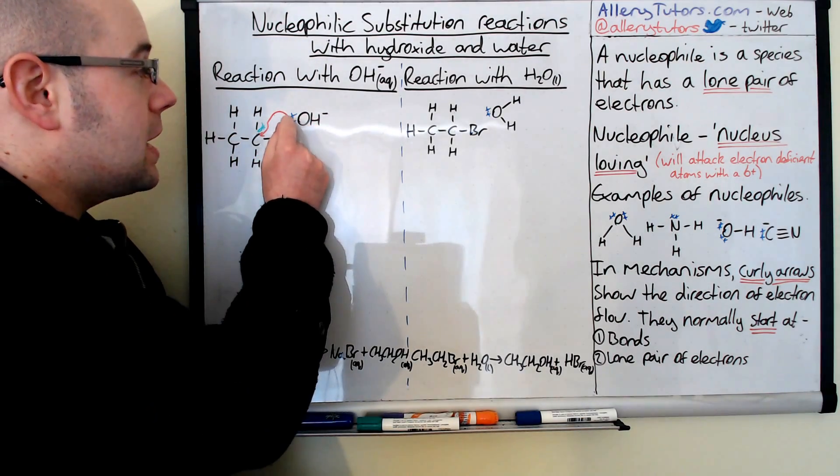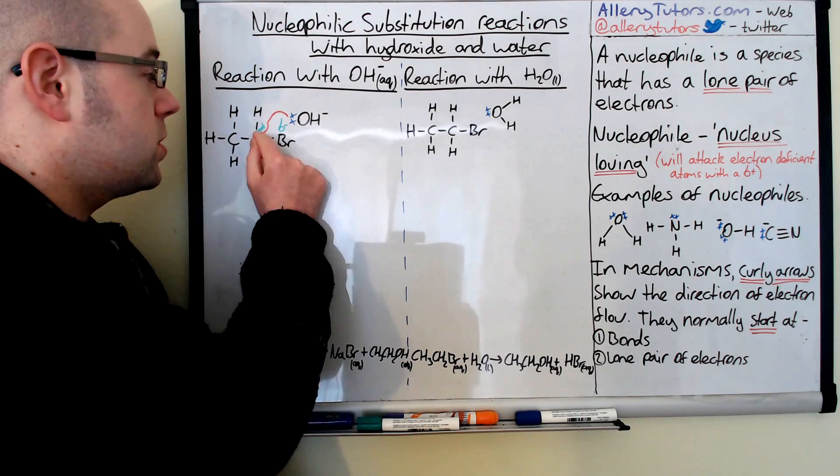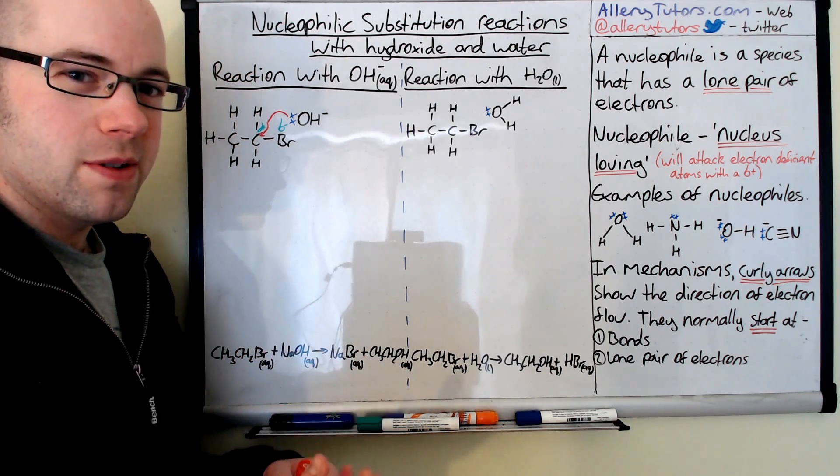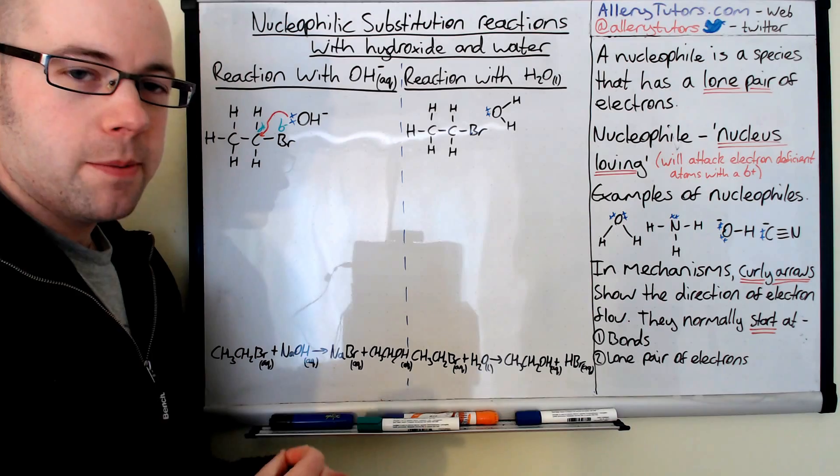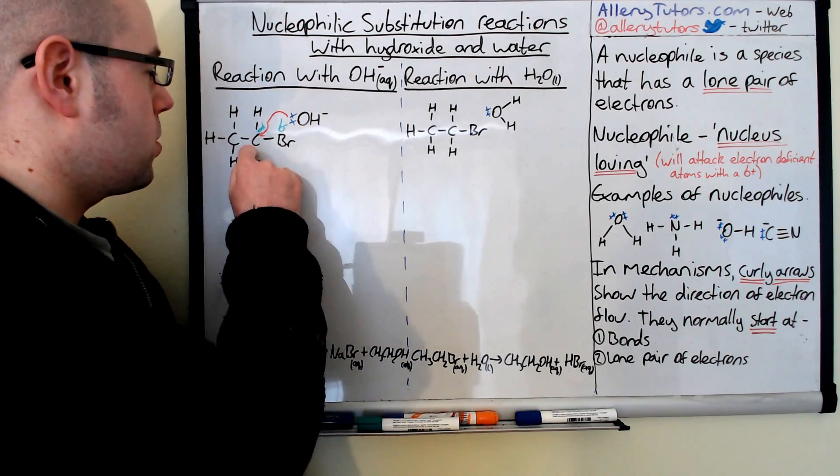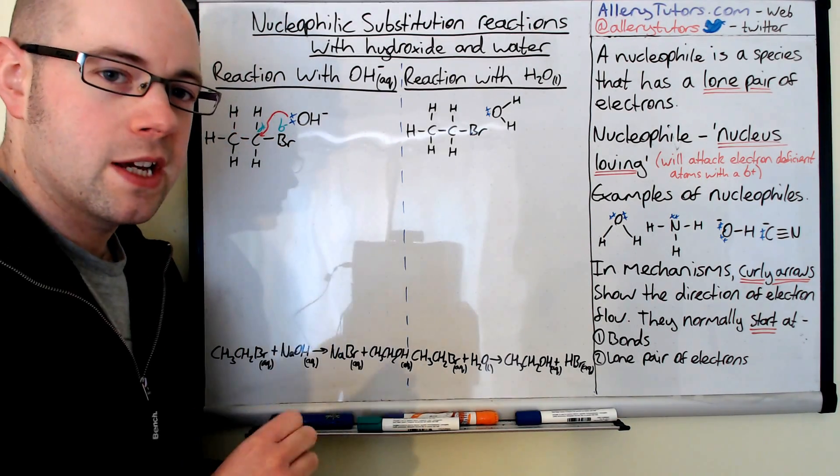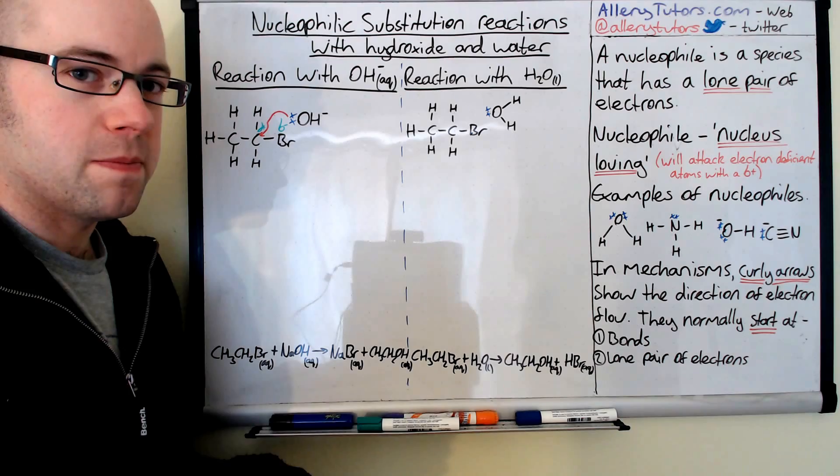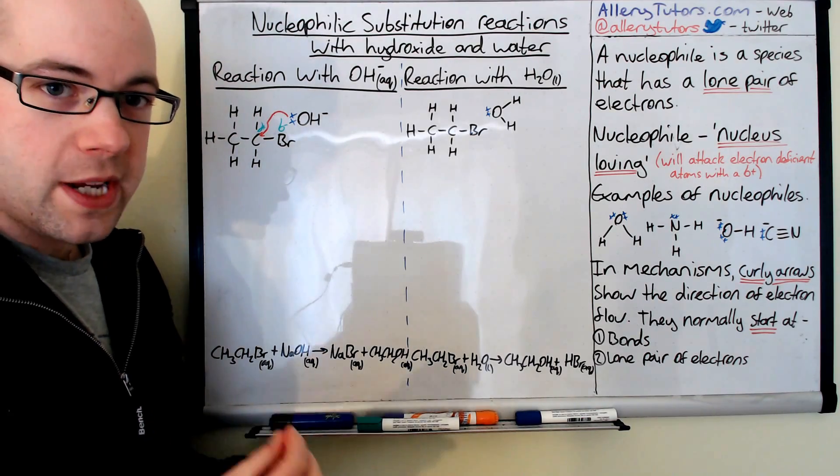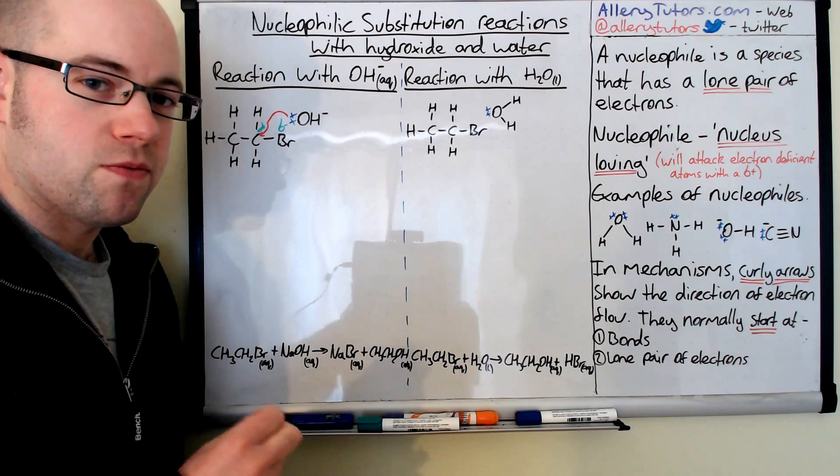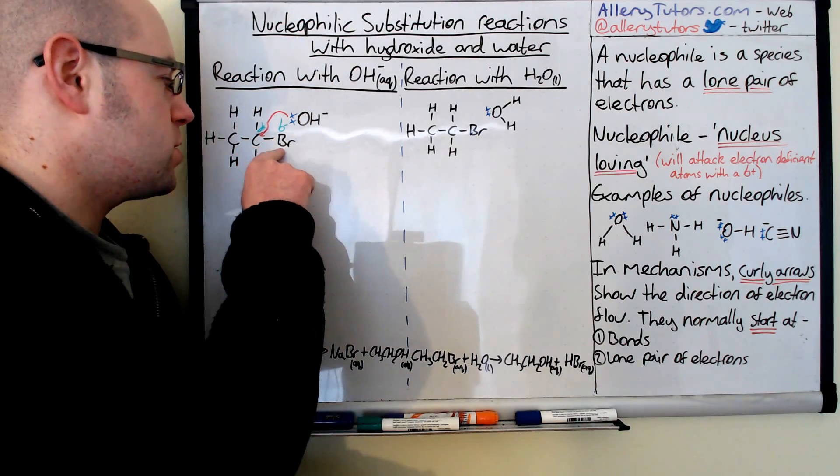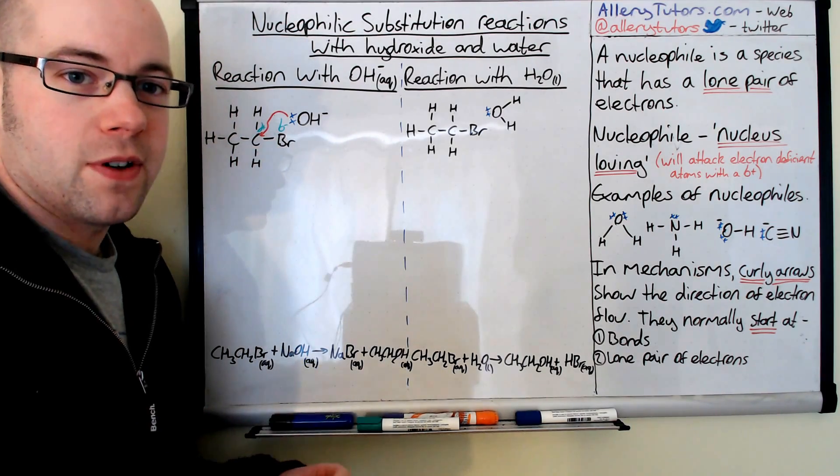What this means is the electrons are moving from here onto this carbon. So we're actually trying to form a bond with the carbon. Now carbon can only bond four times. You can see it's got one, two, three, four bonds already. Now one of these bonds has got to break, and it's the weakest bond that breaks. In this case, it's going to be the C-Br bond. C-H bonds are really strong, so this one will then be kicked off effectively.